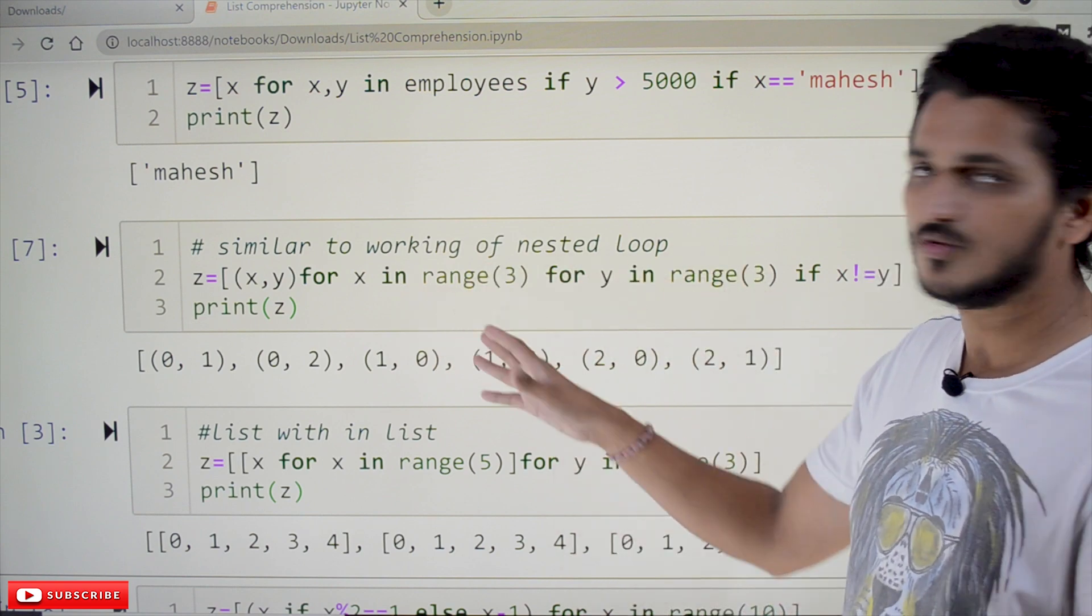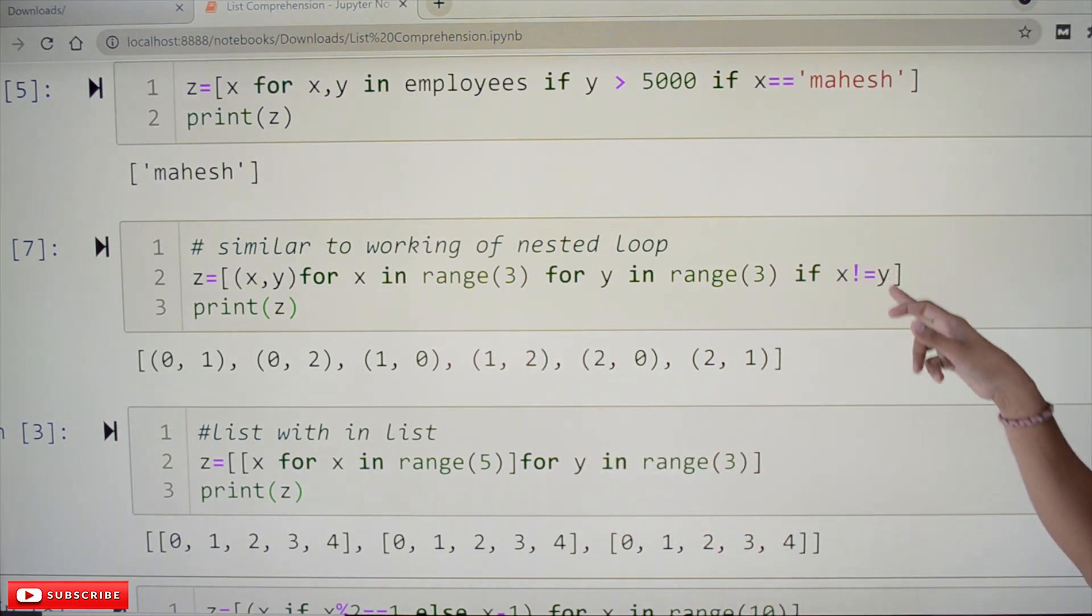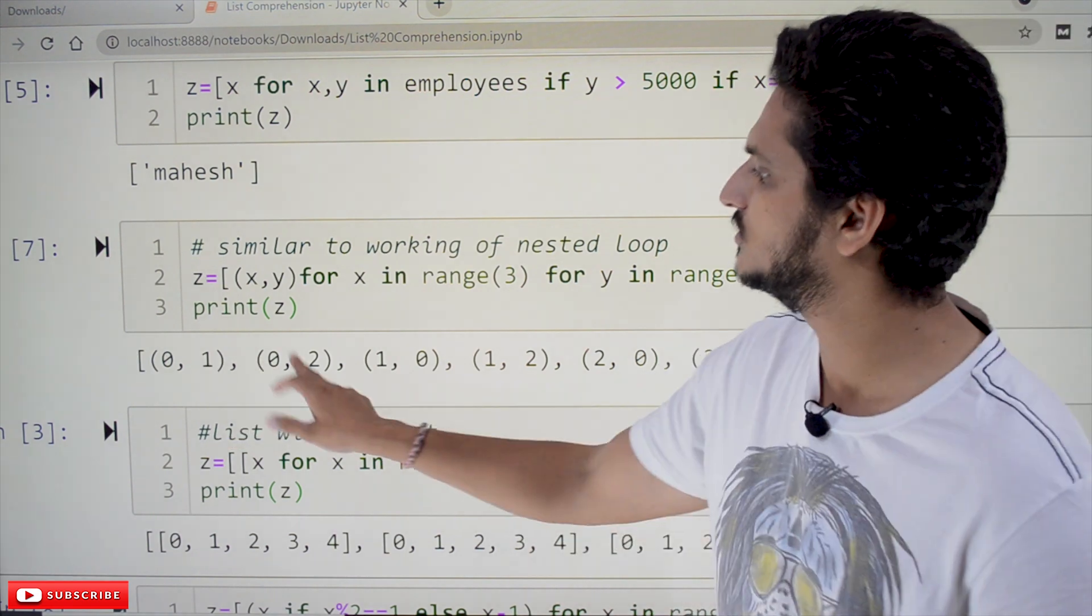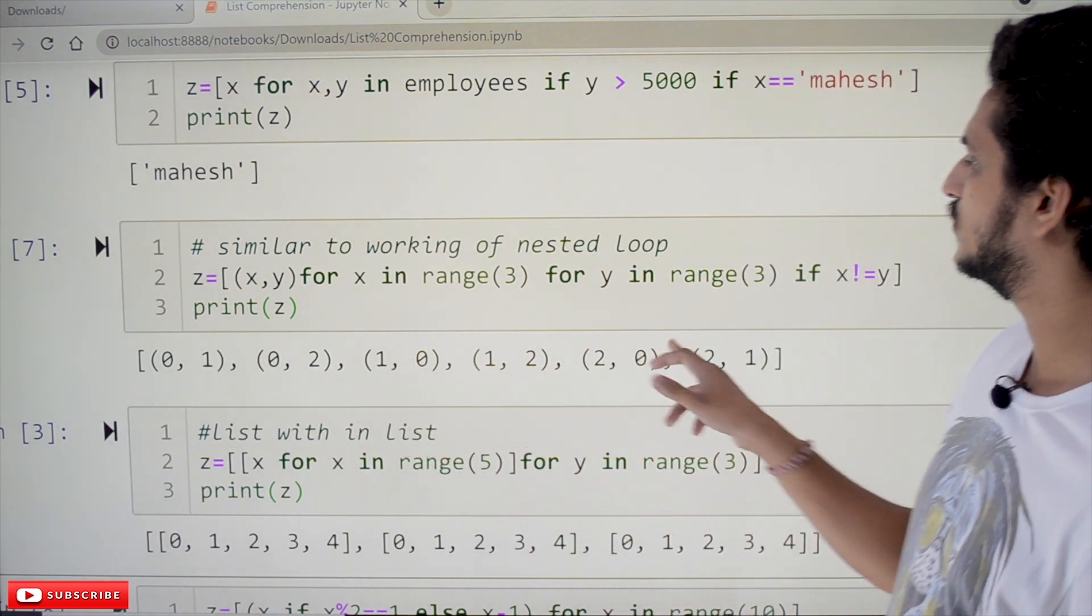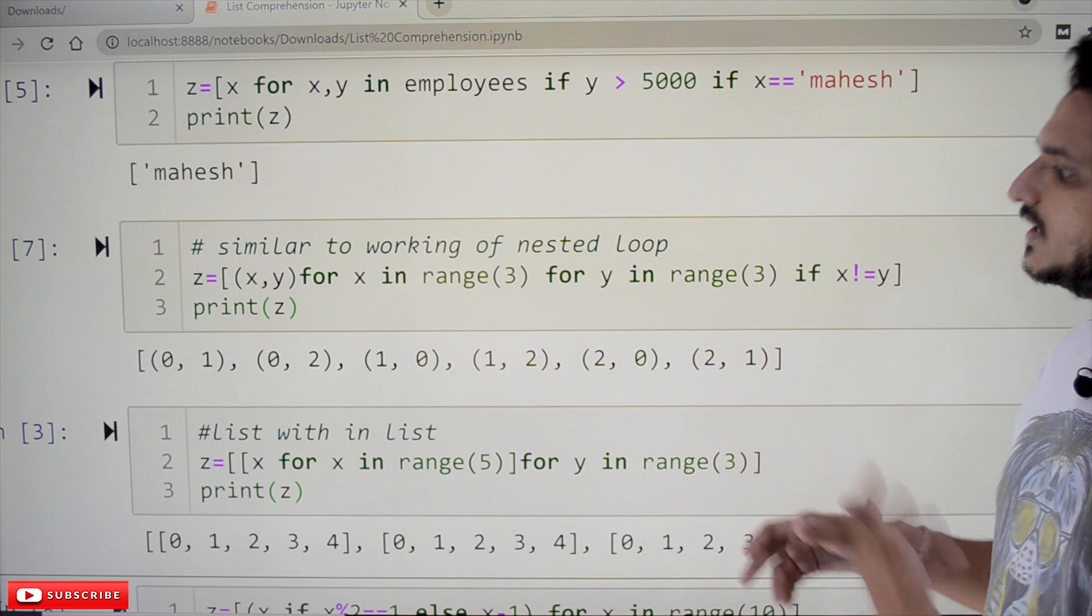This is how nested loops works. The same way it will work. But the condition here we mentioned if x not equal to y. So, what pairs will be considered: (0,1), (0,2), (1,0), (1,2), (2,0), (2,1). So, we created a list.